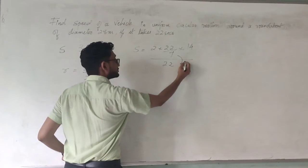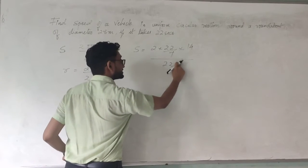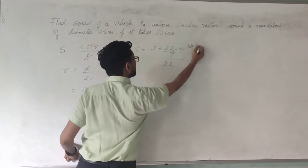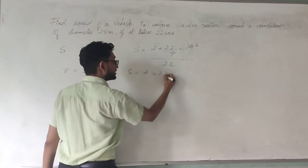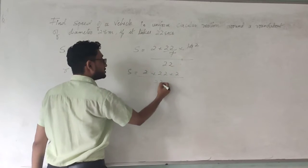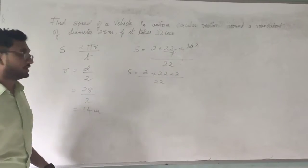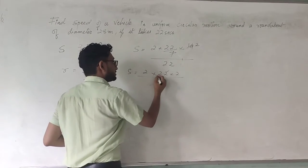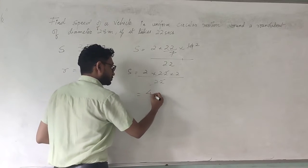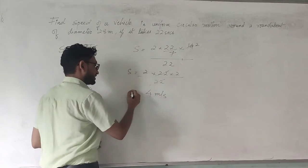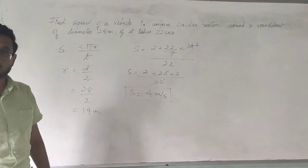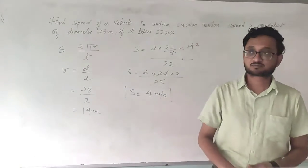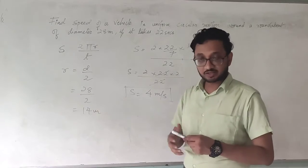Now this 7 goes into the denominator but you can solve it as 7 into 14. So what you get is s is equal to 2 into 22 into 2 upon 22. 22 gets cancelled. So the remaining is 2 into 2 as 4 meters per second. So the speed of the object moving in uniform circular motion is 4 meters per second.